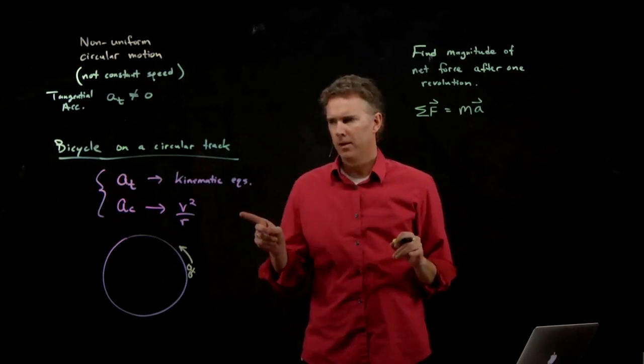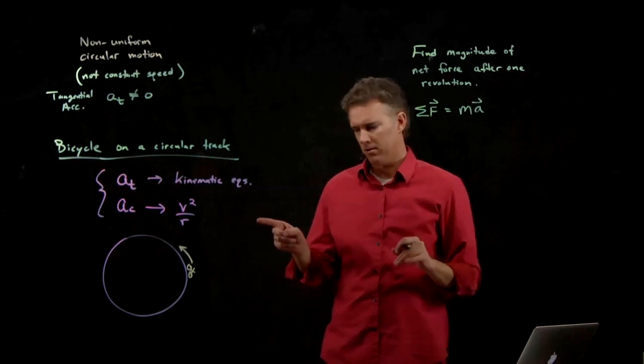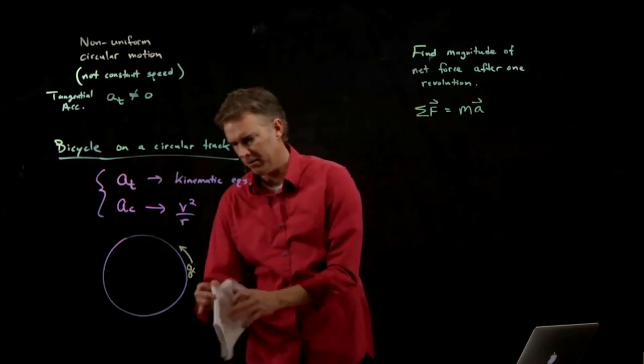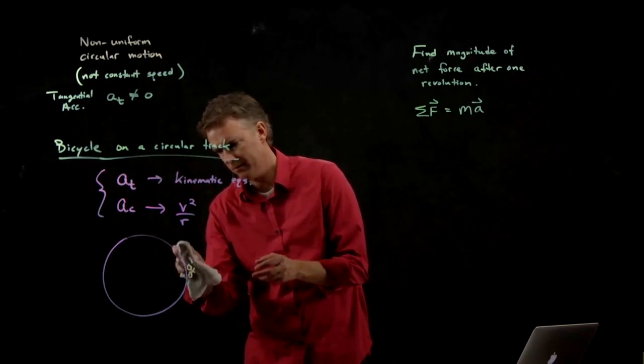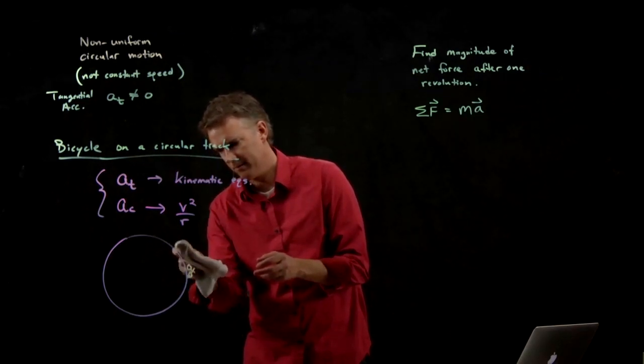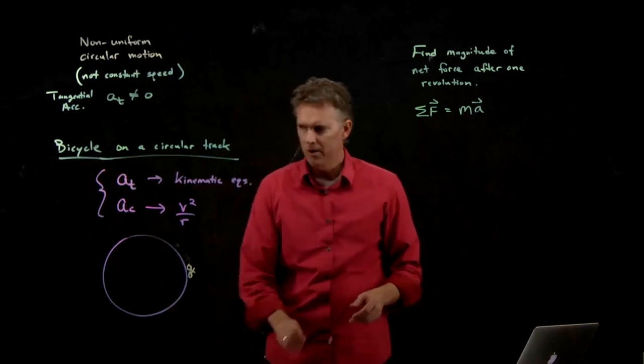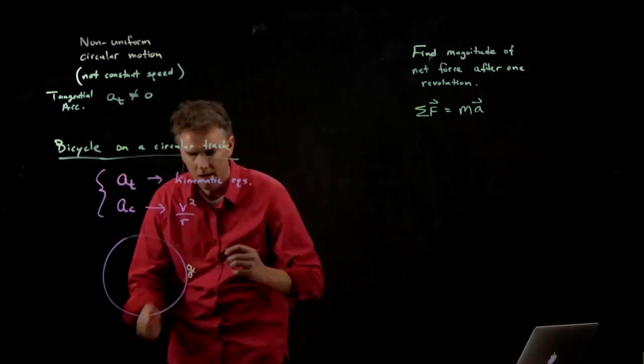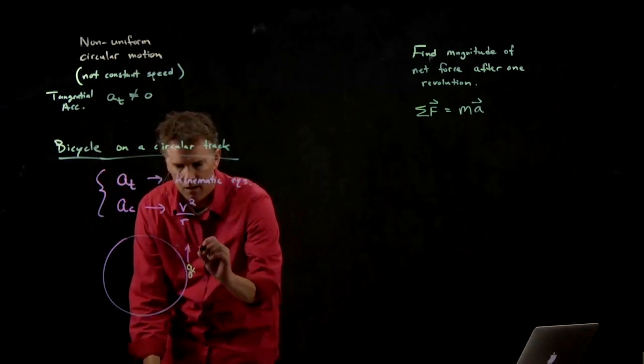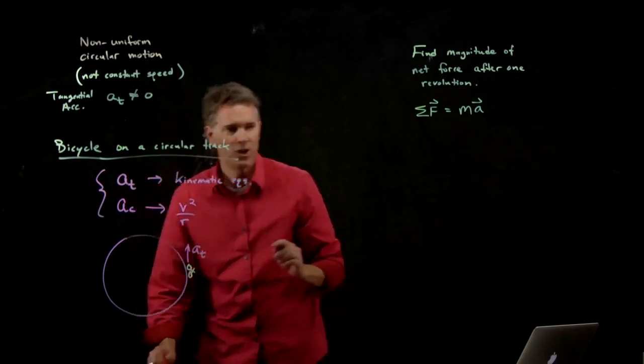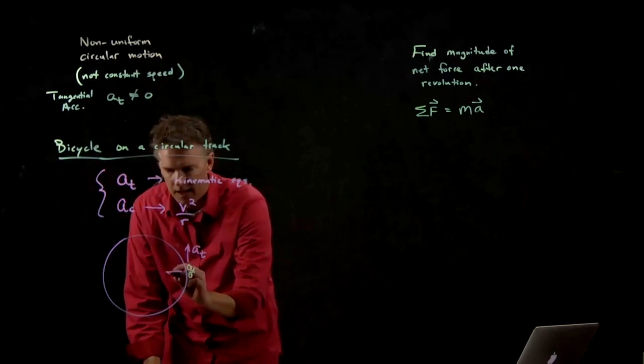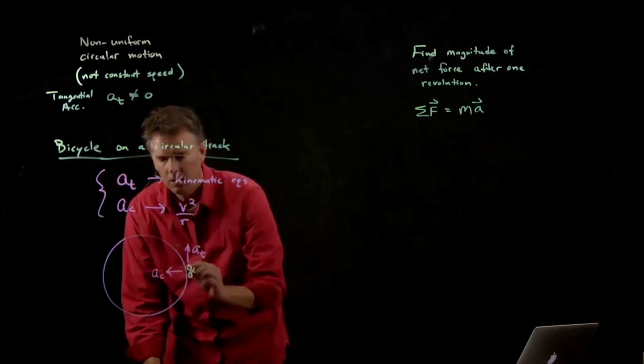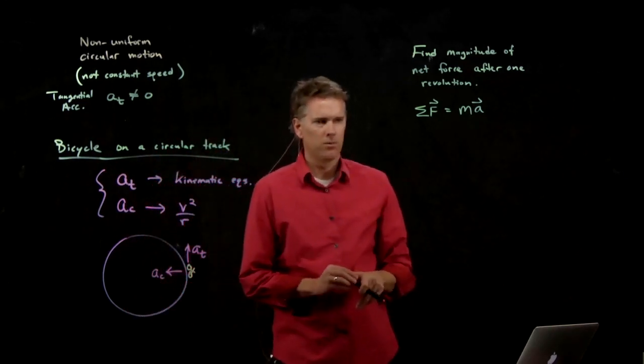But we gotta be careful because this bicycle in this position as it goes around is going to have a_t which is tangential to the circle and it's going to have a_c which is along the radius.